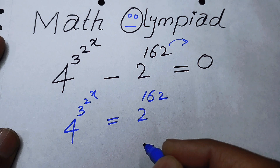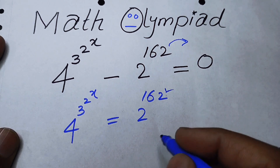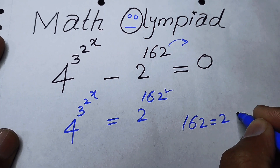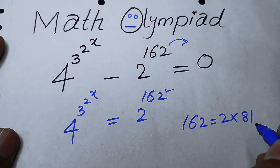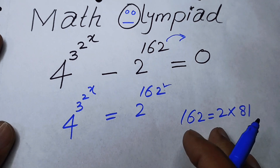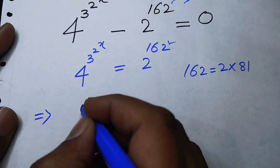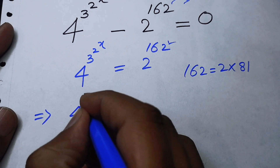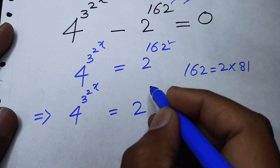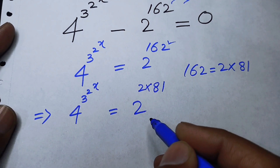Now we focus on 162, which can be written as 162 equals 2 multiplied by 81. We will replace 162 by 2 multiplied by 81, so this exponential equation becomes 4 to the power of 2 to the power of x, is equal to 2 to the power of 2 multiplied by 81.